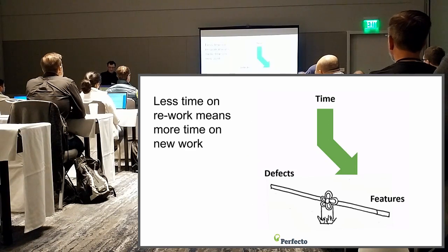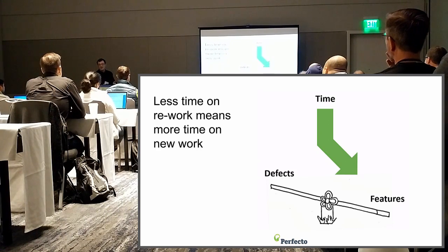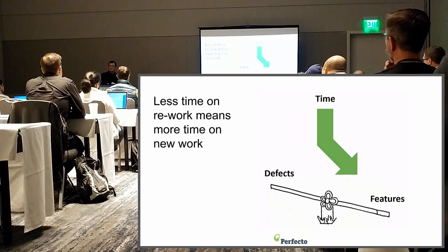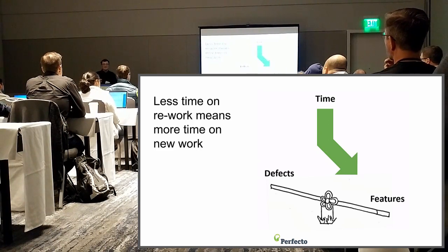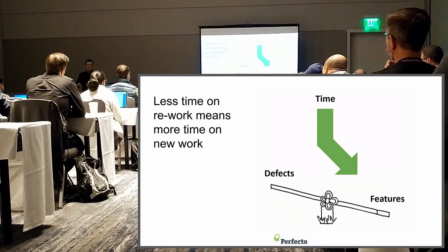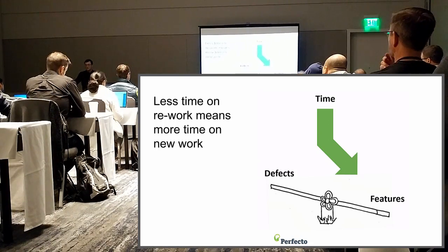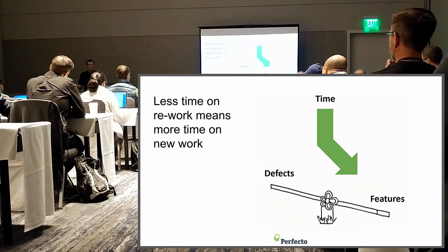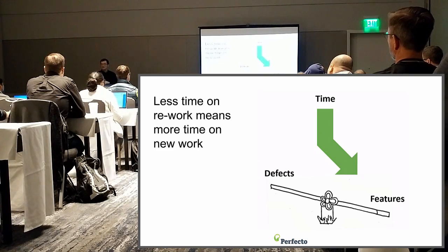We've got a lot of work to do — do we incorporate those challenges or run away from them? If we run away from them, we end up signing off on code that is inherently broken for our audience. We need to introduce these real-world conditions further and more often. The idea is to spend less time on rework and specifically on defects. Defects undermine not just the quality of the app but the velocity of the teams.